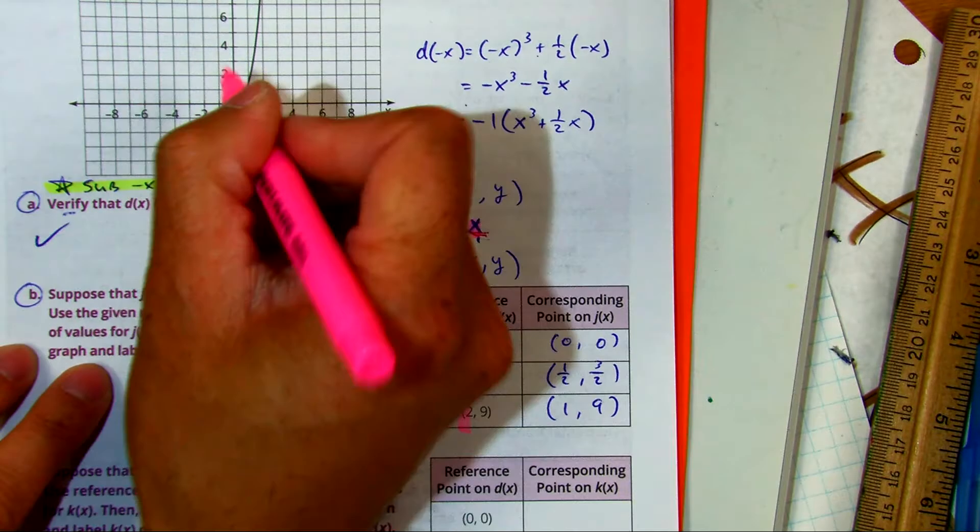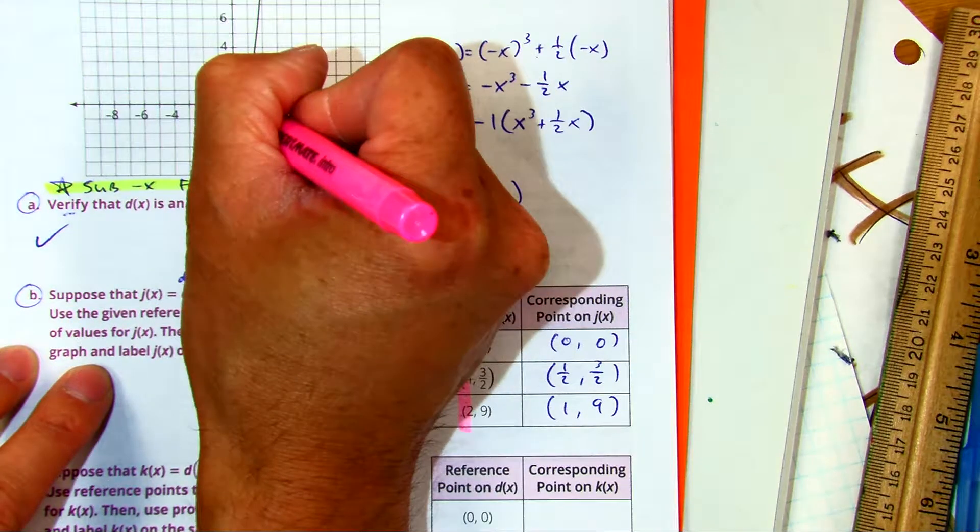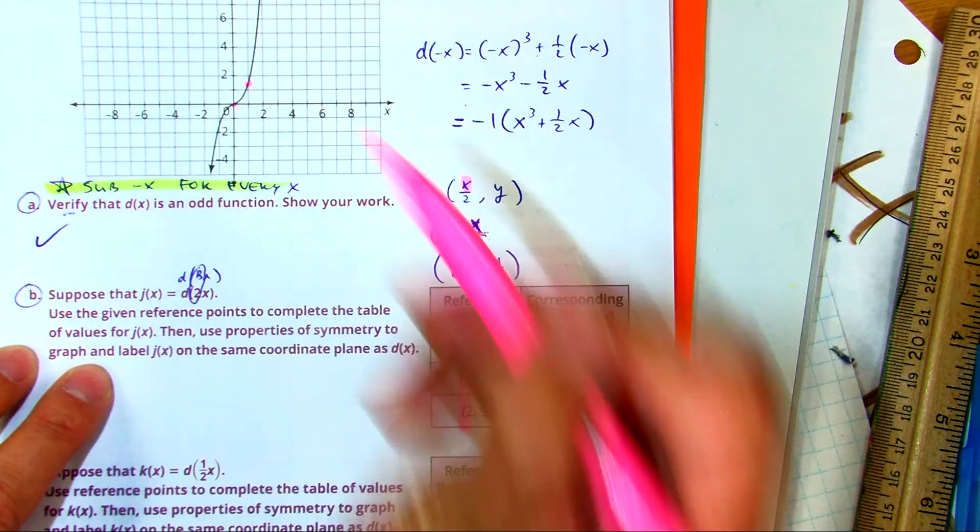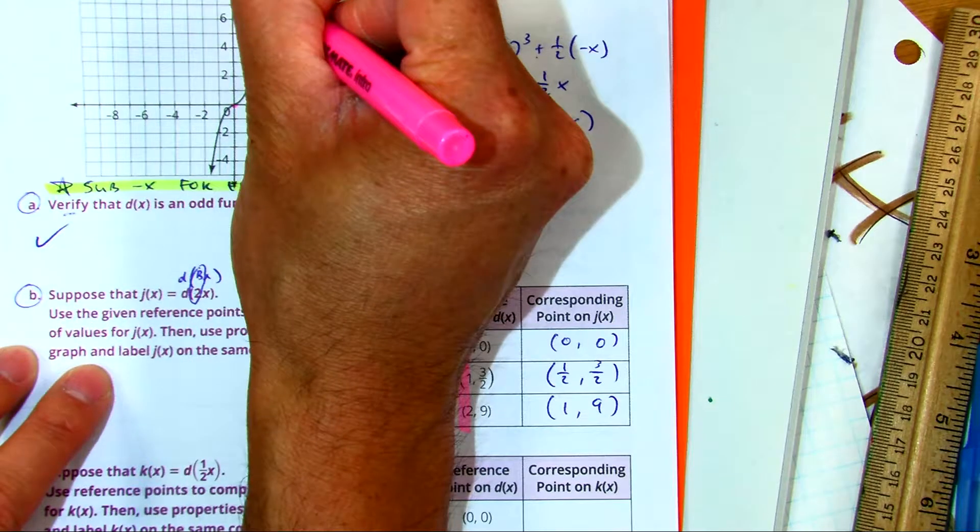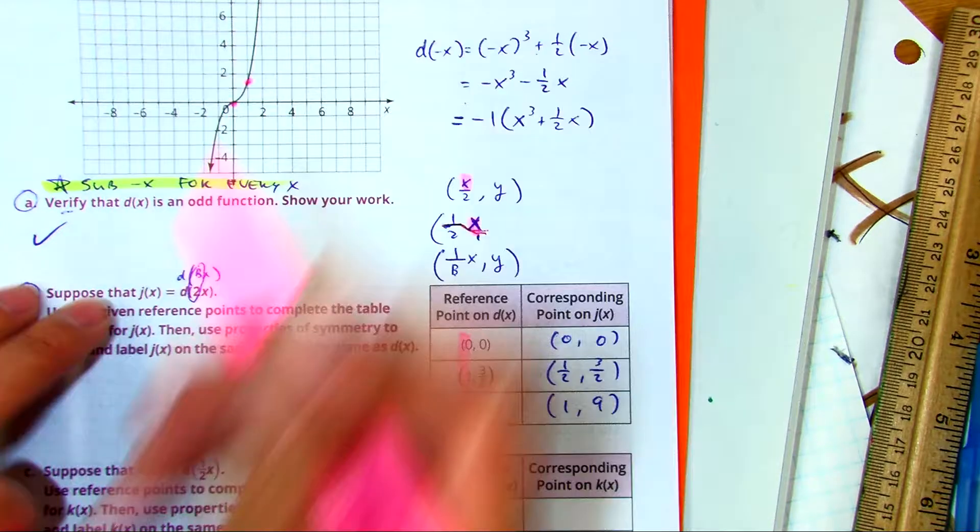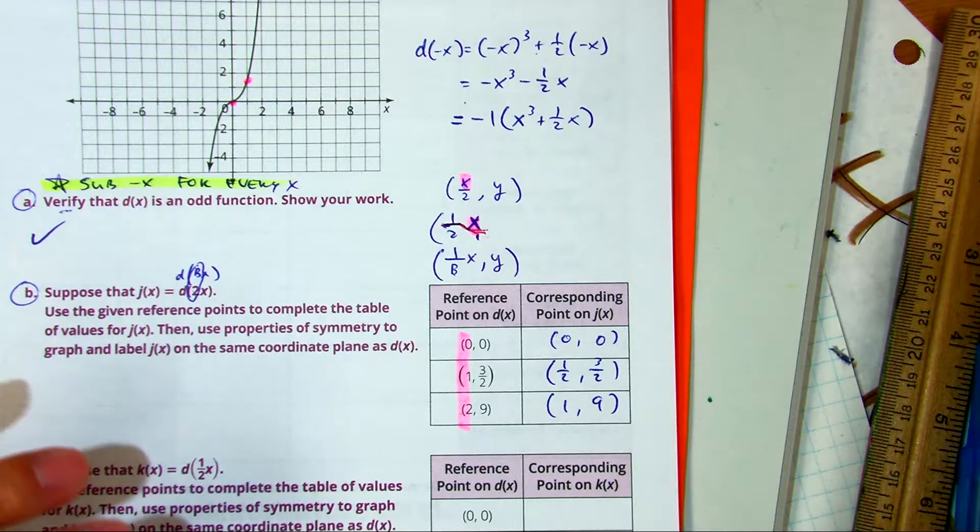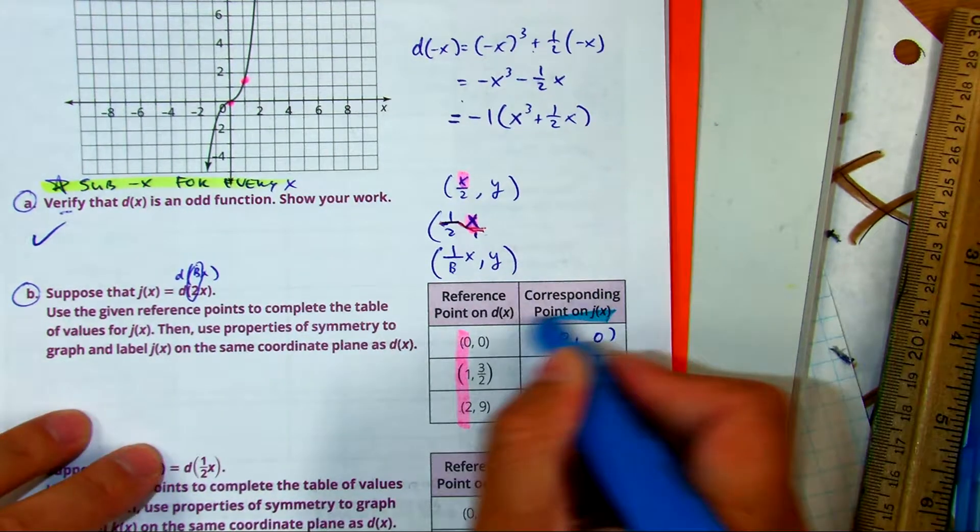So 0, 0. I'm just going to graph the original in pink. Right 1 up 3 and a half or 1.2. Right 2 up 9. So these are the original points. And then this, let's do this in blue. 0, 0.